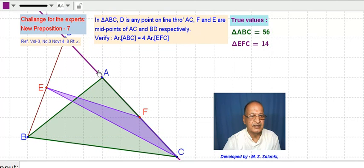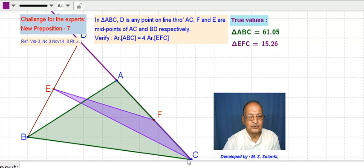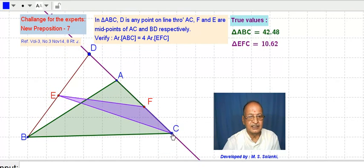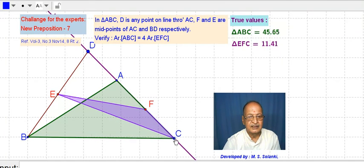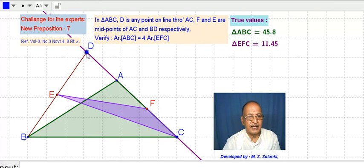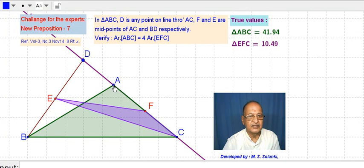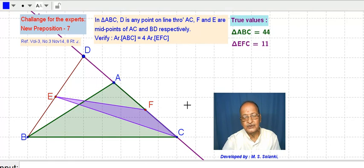We will give a copy of our journal, which is At Right Angles, published by Azim Premji University, to whoever provides the correct proof. Jai Gurudev, Jai Maharshi.